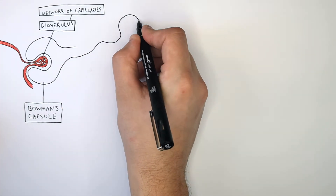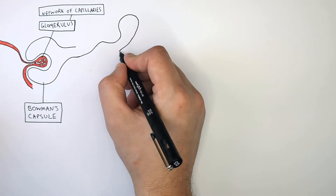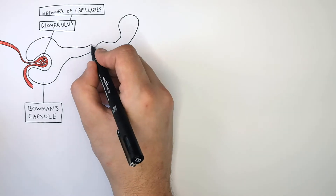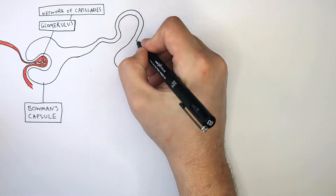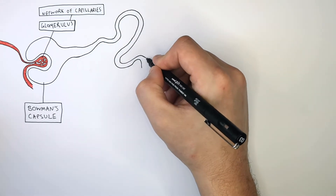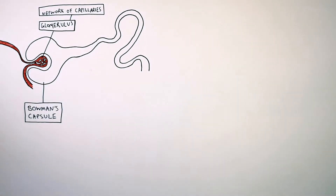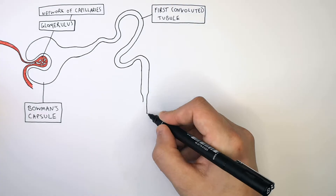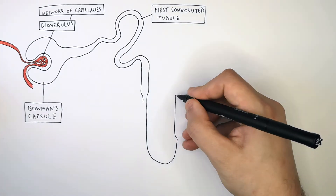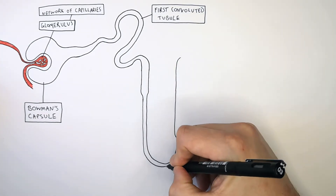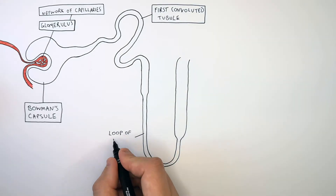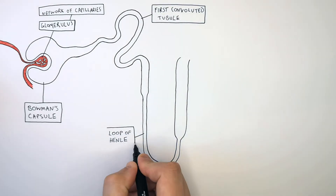The next part of the nephron is called the first convoluted tubule. The first convoluted tubule connects the Bowman's capsule of the nephron to the loop of Henle.